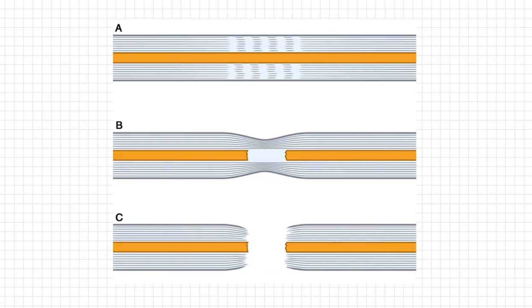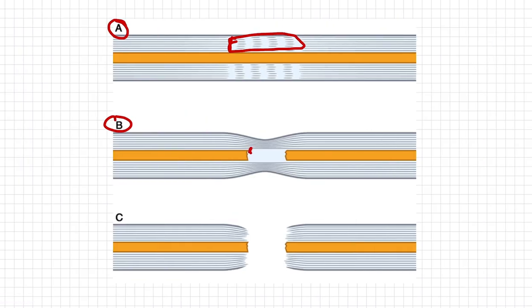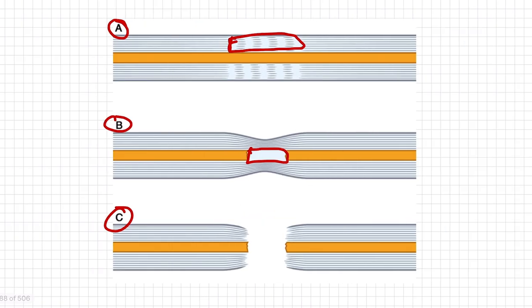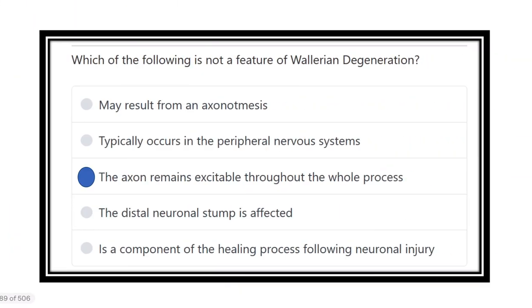Another diagram shows clearly: in neuropraxia only the covering area is affected; in axonotmesis only the axon is destroyed; and in neurotmesis, type C, the whole cross-sectional breadth is involved — the entire nerve is transected.